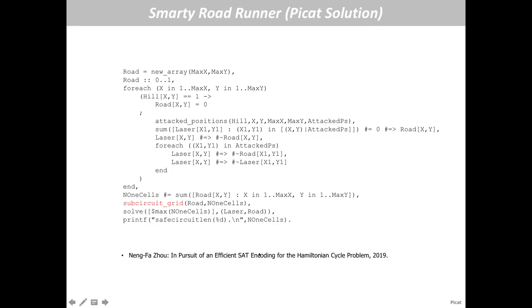Audience questions about notation: The pound sign means it is a constraint (equality constraint); without pound, it means unification. The arrow with pound means it is an implication constraint. The negation symbol is indeed negation — good guess.